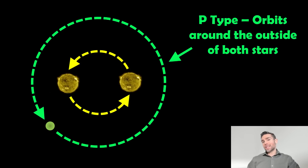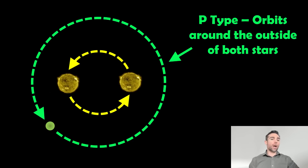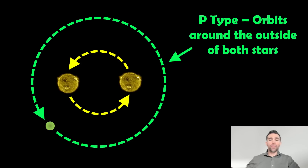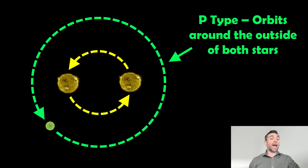There are basically two sorts of orbits you can have when you've got a binary star system — a bit of a recap before I move on to three stars and beyond. We have P-type orbits, where the planet — shown as the green orbit — is going around the outside of both of the stars. What we'd classify as a circumbinary planet going around the outside — that's a P-type orbit.